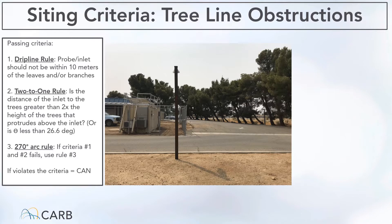Now that we know where our inlets will be located, we can move on to obstructions. There are sites that are surrounded by vegetation and trees, and those can grow over time. So it is a good idea to pay attention to obstruction. There are a couple of rules and criteria to follow to make sure your site is in the clear. There are three rules: number one, the drip line rule; number two, the two-to-one rule; and number three, the 270-degree rule.